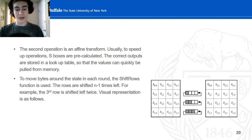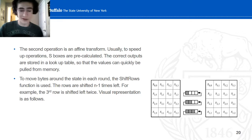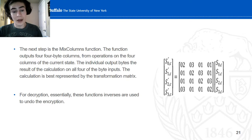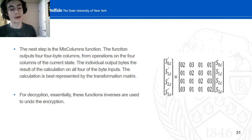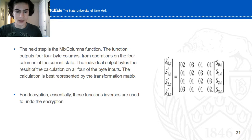Some loop bytes are used around the state in each round. The shift row function is used — rows are shifted left n-1 times. For example, the third row is shifted twice. The next step is the mixed column function. The function outputs a 4x4 byte matrix from operations on the 4 columns of the current state. The result of the computation is best represented by a transformation matrix. For decryption, essentially these functions are applied in inverse.